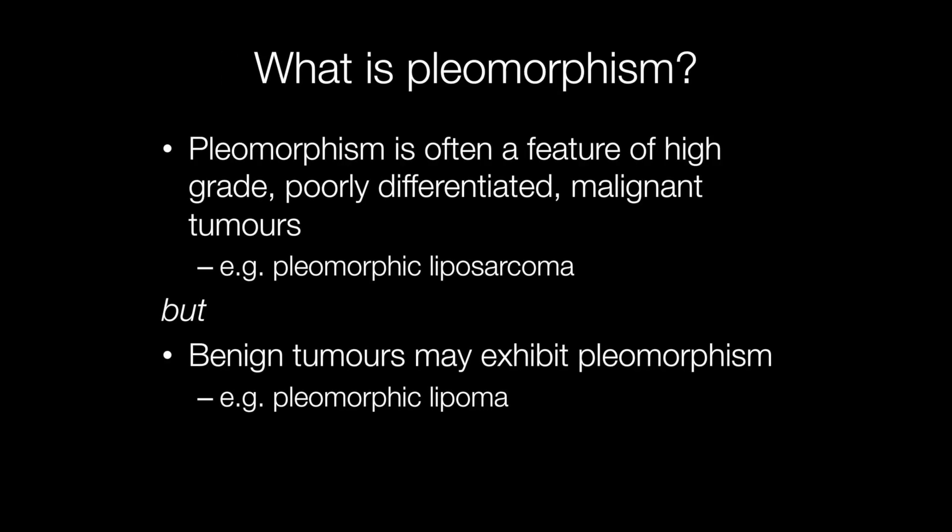Cellular pleomorphism is often a feature of high grade poorly differentiated malignant tumours, a good example being pleomorphic liposarcoma. But benign tumours may also exhibit cellular and nuclear pleomorphism and a good example of this is a pleomorphic lipoma.